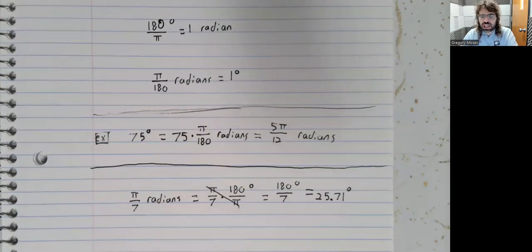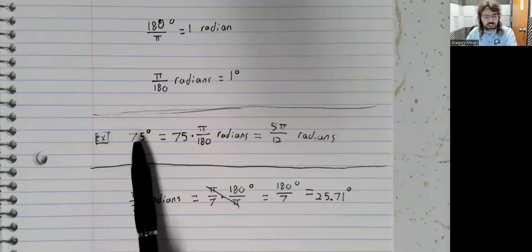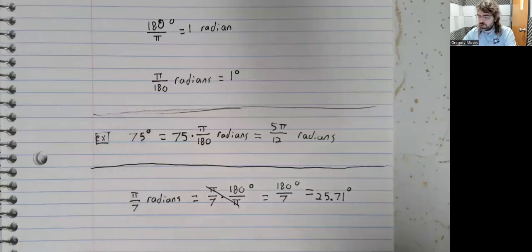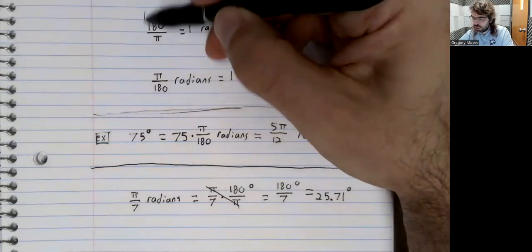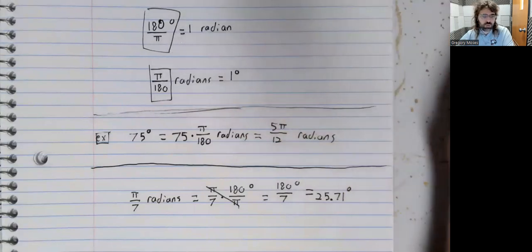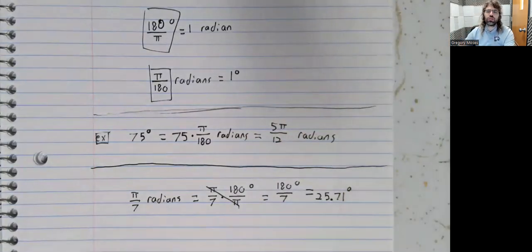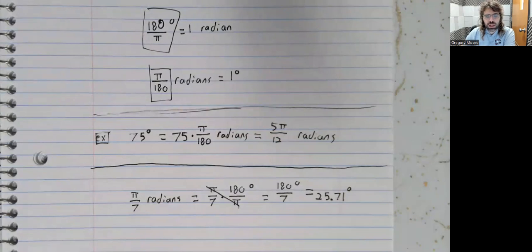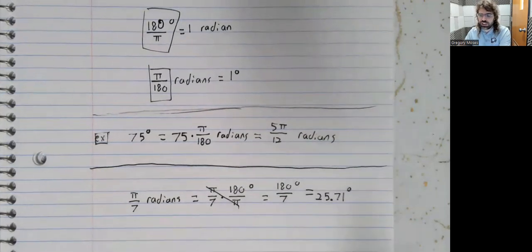That's the process. You take the number of degrees or radians and multiply it by the appropriate quantity to do the conversion. There are some radian values you should probably just know without having to go through this process every time.